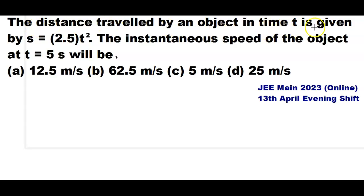The distance traveled by an object in time t is given by s = 2.5t². The instantaneous speed of the object at time t = 5 seconds will be?